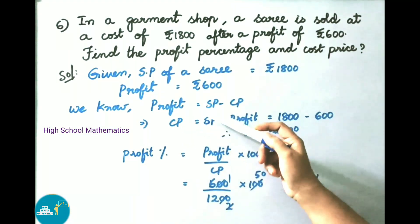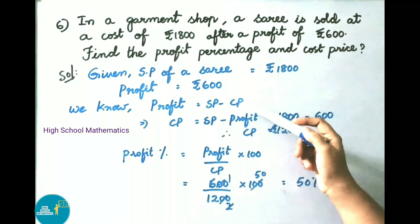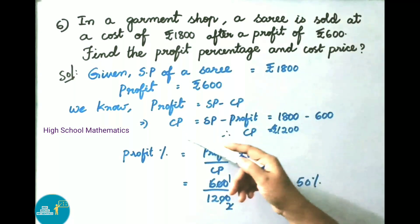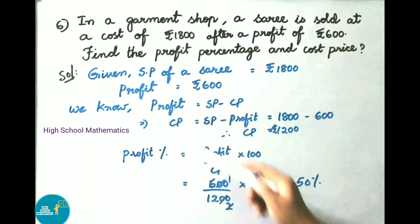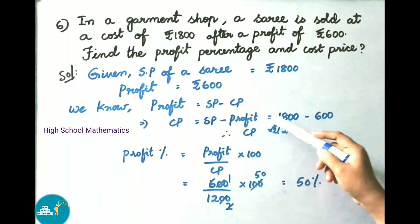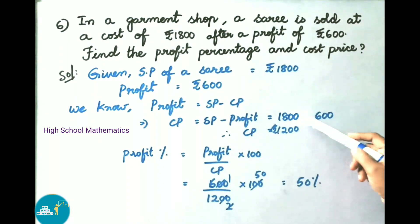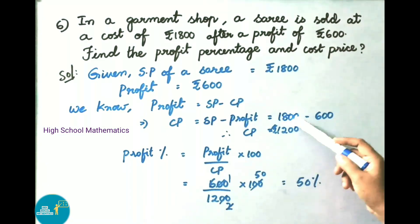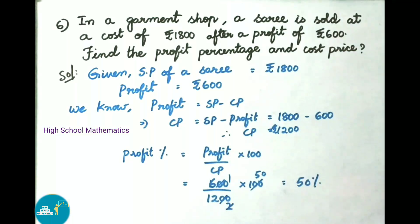We know profit formula equals selling price minus cost price. We need to find cost price, so cost price equals selling price minus profit. That equals 1800 minus 600, which gives 1200 rupees. Therefore cost price of sari is 1200 rupees.